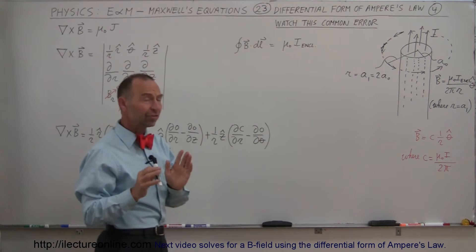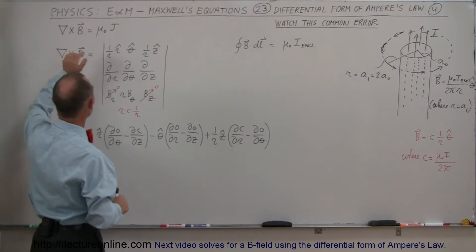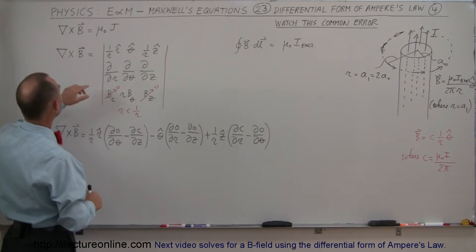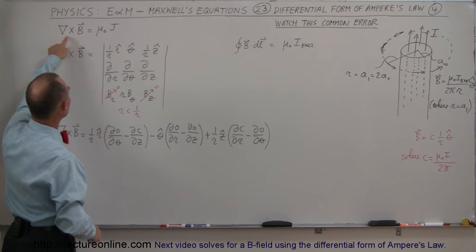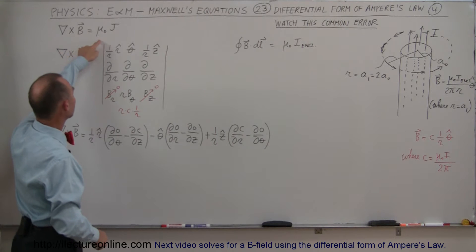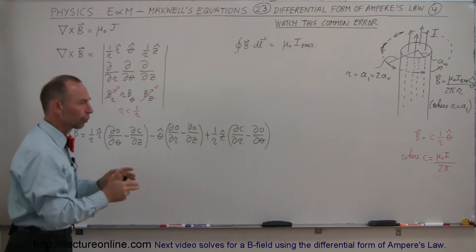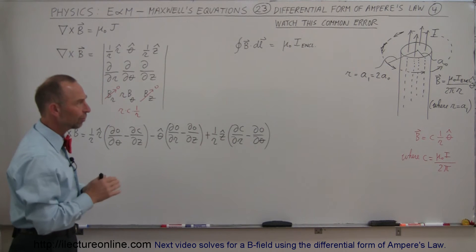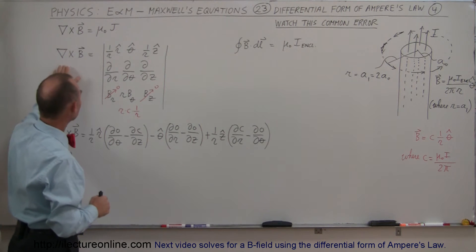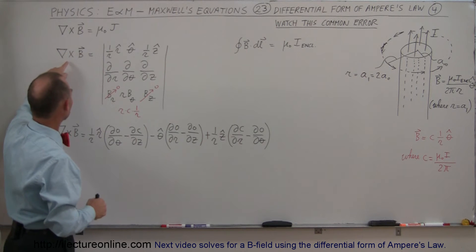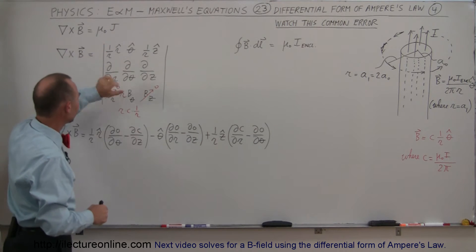Now if you want to use the same thing using the differential form of Ampere's law, then of course you want to take the curl of B, and that is equal to μ₀ times the current density. And the current density would be the total current divided by the area over which it is spread.